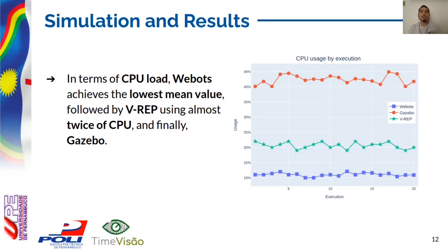In terms of CPU usage, as can be seen in the figure, Webots achieved the lowest mean value with 11% of use, followed by VREP which used almost twice the CPU with 20%, and finally Gazebo with 42% mean CPU use, as can be seen in the figure on the right.